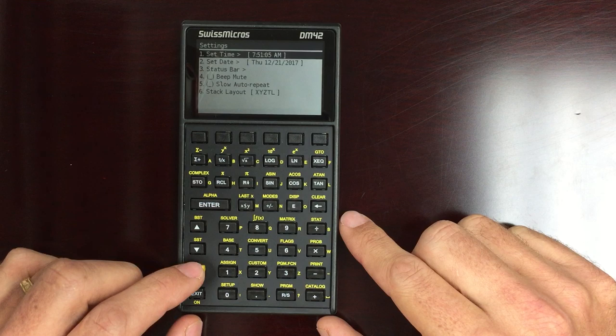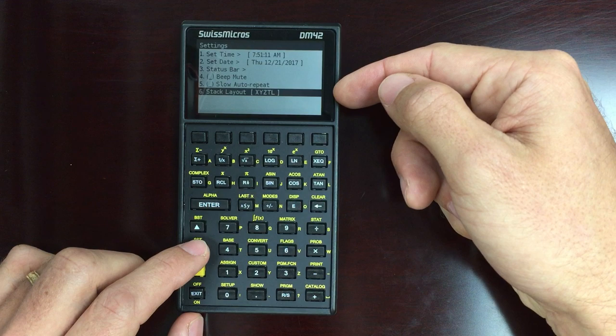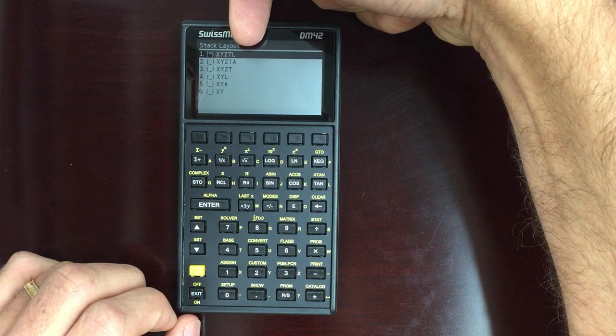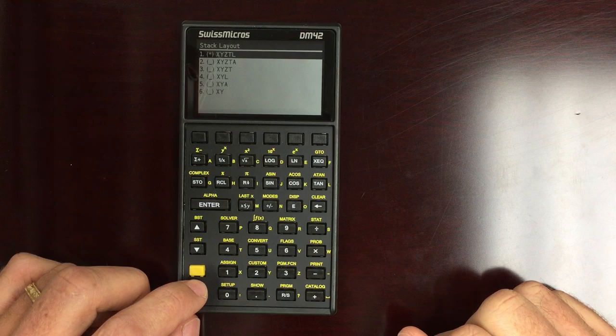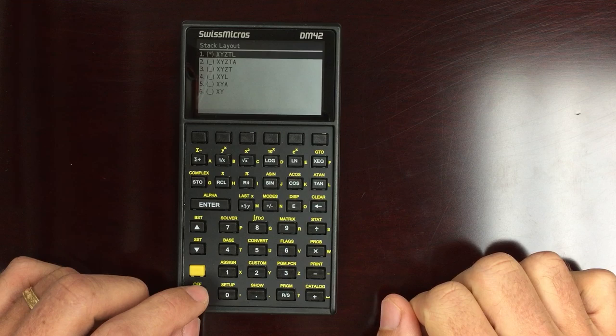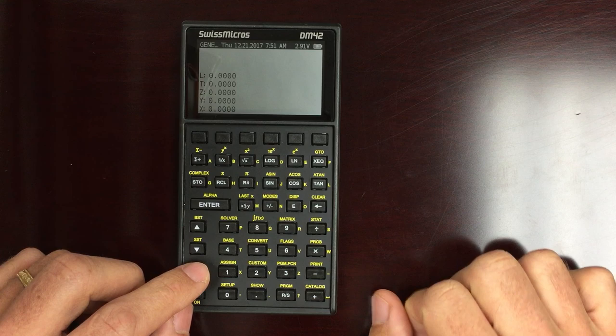Okay. We talked about that settings. So stack layout here. I can change the stack layout to be my X, Y, Z, T stack plus my last X value. Or I can have it X, Y, Z, T and then the alpha register, X, Y, Z, T or anything up to X, Y. And again, I anticipate that more options will become available. For example, why not display the X, Y, Z, T and the alpha menu? Or maybe somebody would just want to see the X register. So I anticipate that that will happen eventually.